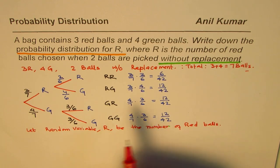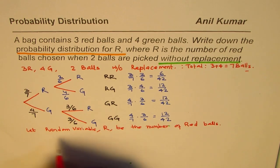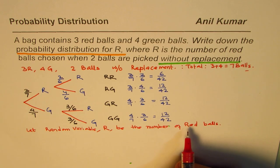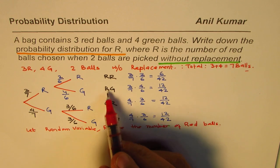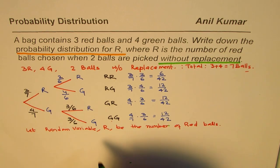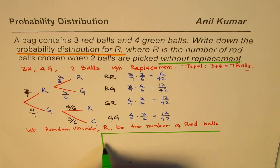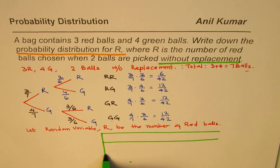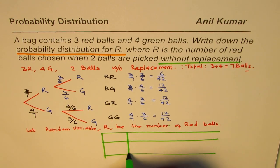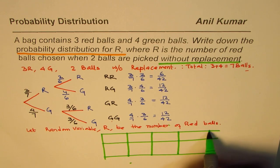The number of red balls is our defined random variable. When we are picking two balls, the possibilities are that we could get no red ball, one red ball, or two red balls. There are these three possibilities. When we make the distribution table, we will add these probabilities and fill the gaps.